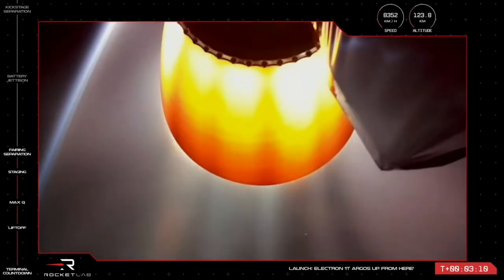Stage two is continuing nominally with its General Atomics payload to orbit. The vehicle is currently at over 120 kilometers of altitude and reaching speeds of more than 8,500 kilometers per hour.